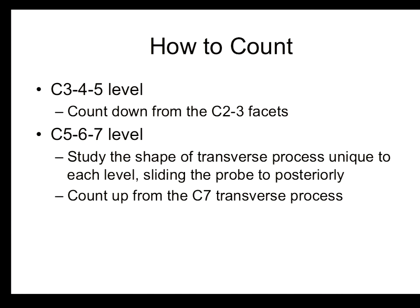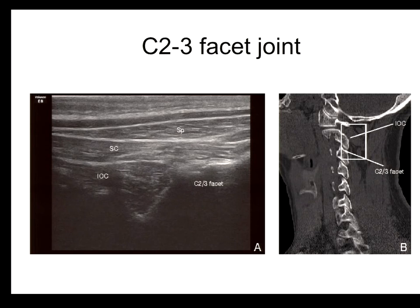For level counting: when you count down from the C2-3 process you can count C3, C4, and C5 levels relatively easily, but it is difficult to count down from C2-3 alone. You need additional landmarks, so you should study the unique shape of the transverse process at each level and slide the probe inferiorly. Alternatively, you can count down from the C7 transverse process. Using an oblique longitudinal scan from the sub-mastoid area, you can see the prominent first joint — the C2-3 facet joint — and count down from there.